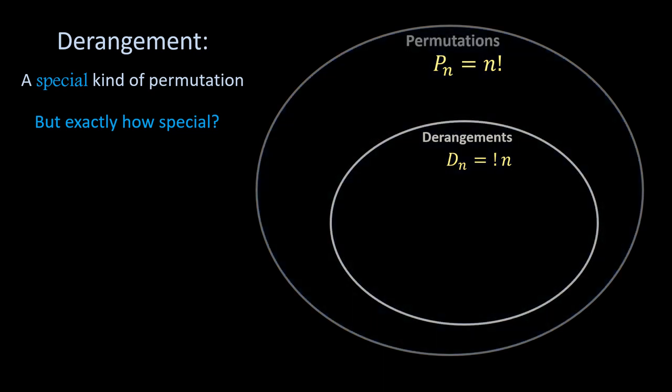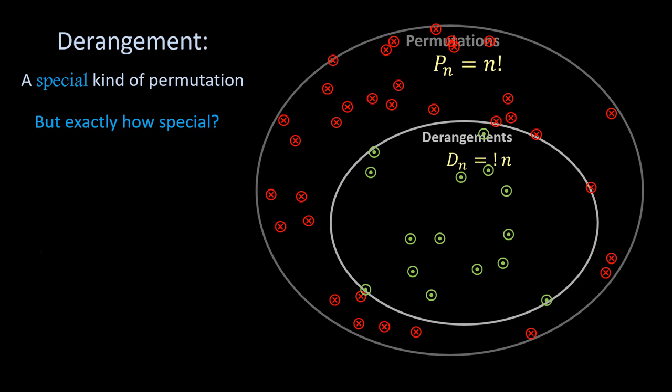The fraction of derangements among all permutations for given n, or equivalently, the probability that a randomly chosen permutation is a derangement, shall be denoted by lowercase d_n, and it's equal to D_n divided by P_n.